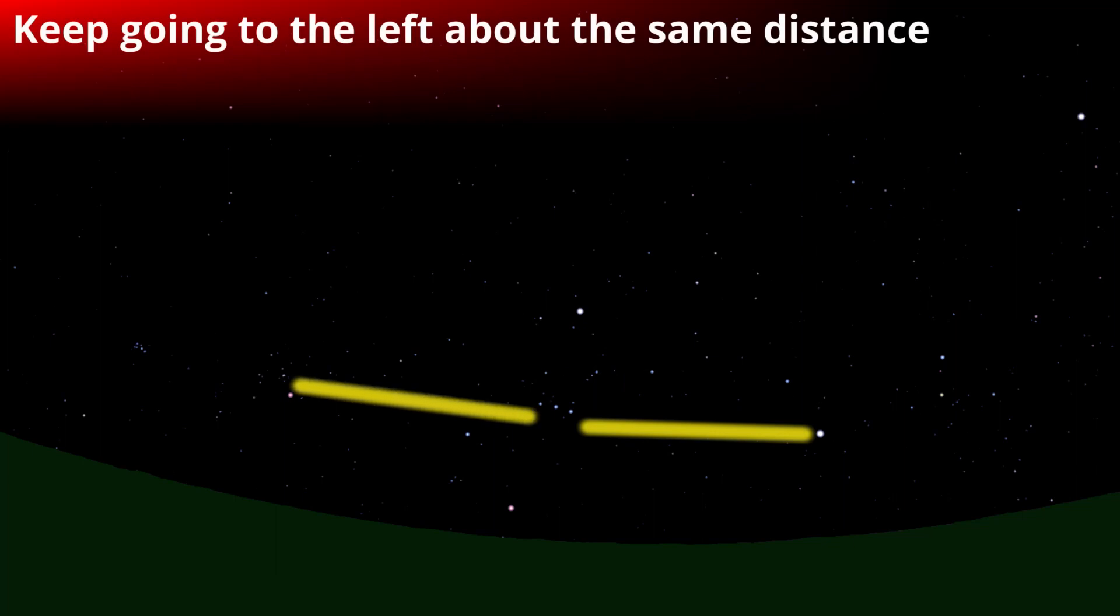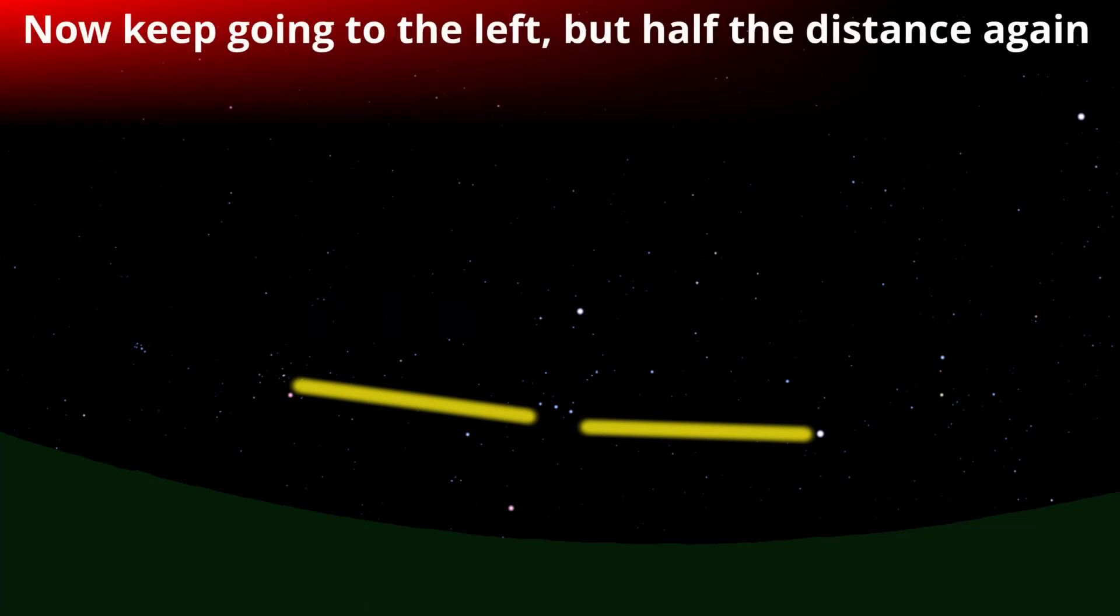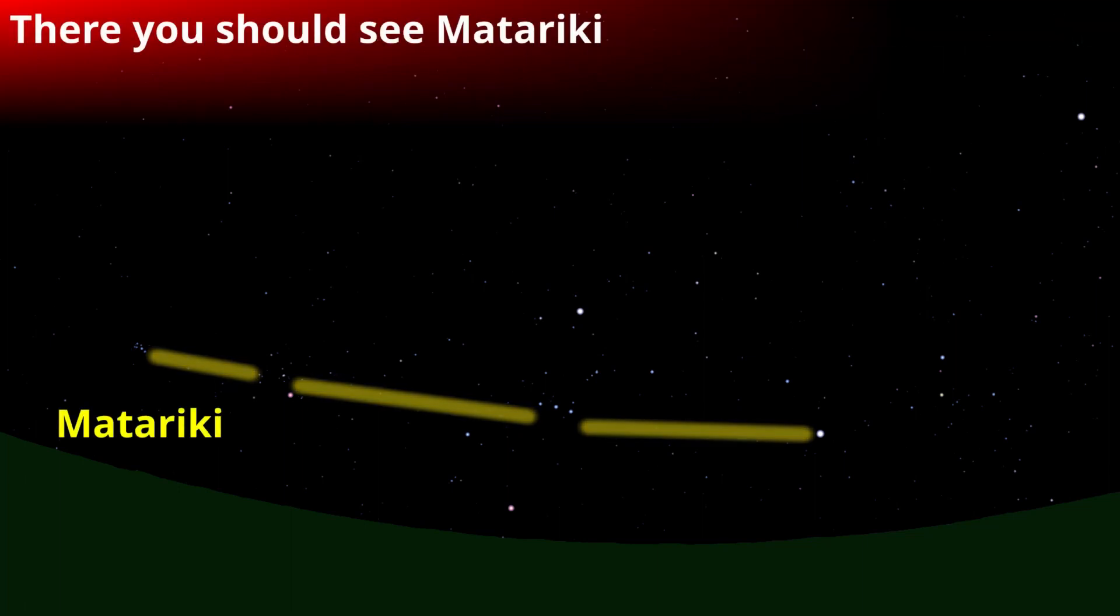Now go about that same distance again, about the same height above the horizon, and you'll come across yet another awesome little cluster called Matakahetu or the Hyades that look like an upside down v or like a mountain peak. So keep going to the left just a little bit more, about half that distance, and you'll come across Matariki.